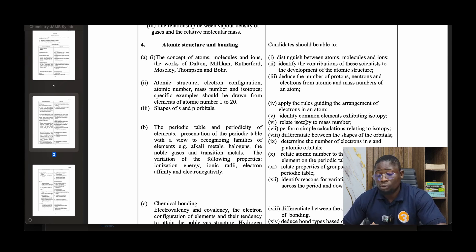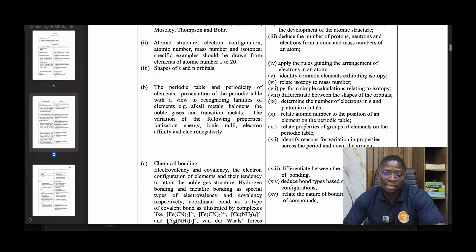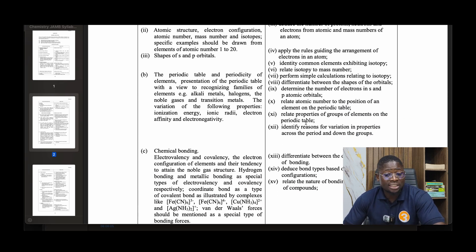Atomic structure, electron configuration, atomic number, mass number, and isotopes. Specific examples should be drawn from elements of atomic number one to twenty. Shapes of s and p orbitals. Then the periodic table and periodicity of elements: presentation of the periodic table with a view to recognizing families of elements - the alkaline metals, alkaline earth metals, halogens, noble gases, and transition metals.